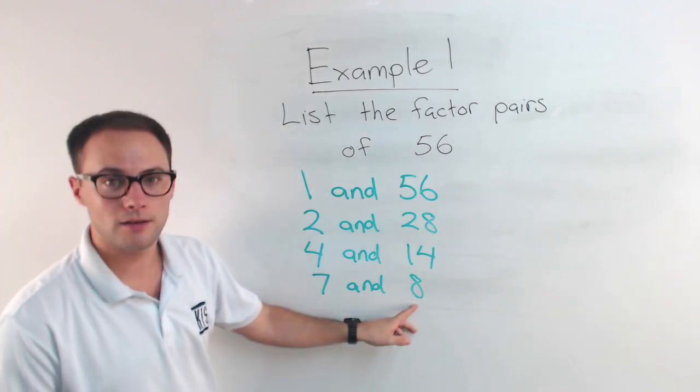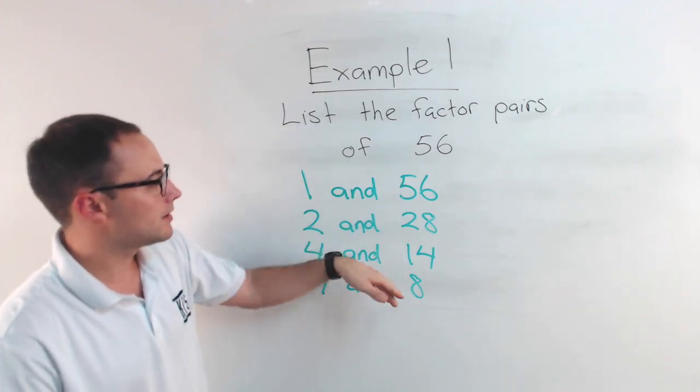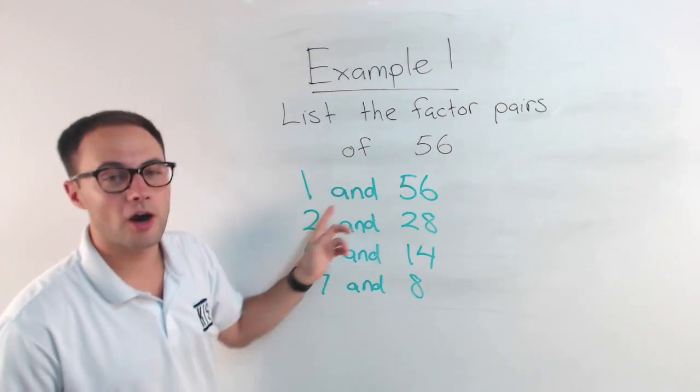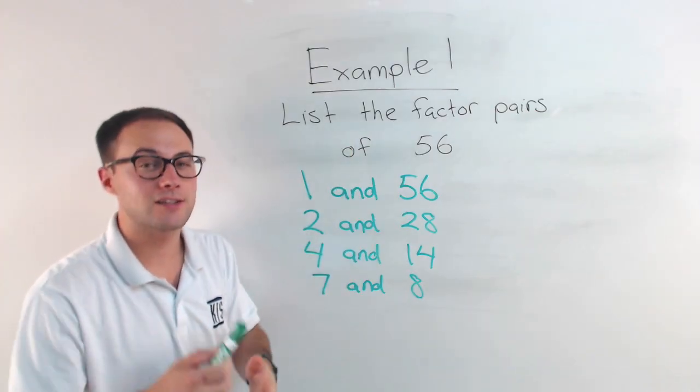And then we're done. Once you get to a number that you've already got, nothing else. So these are our factor pairs. Now try some on your own.